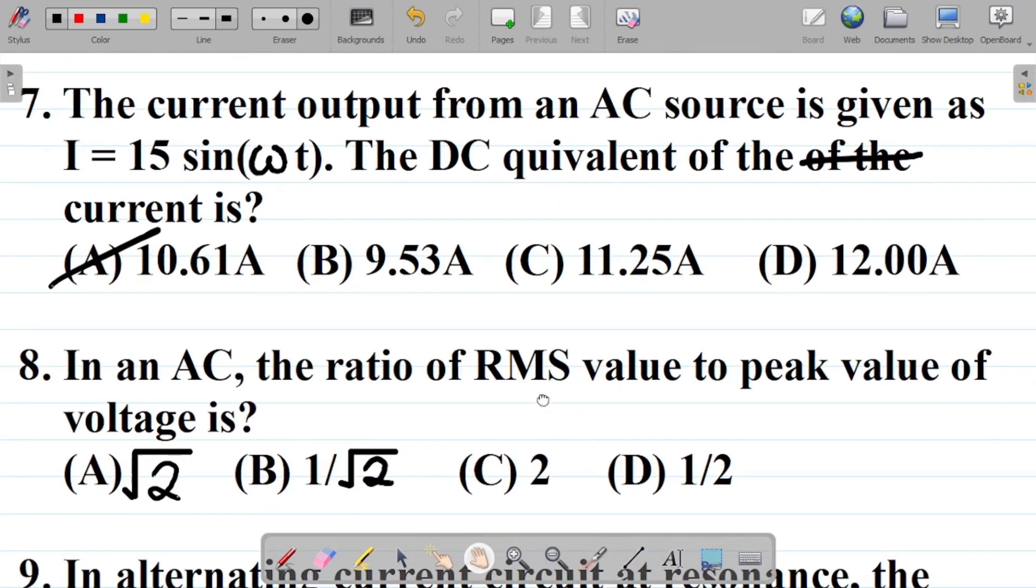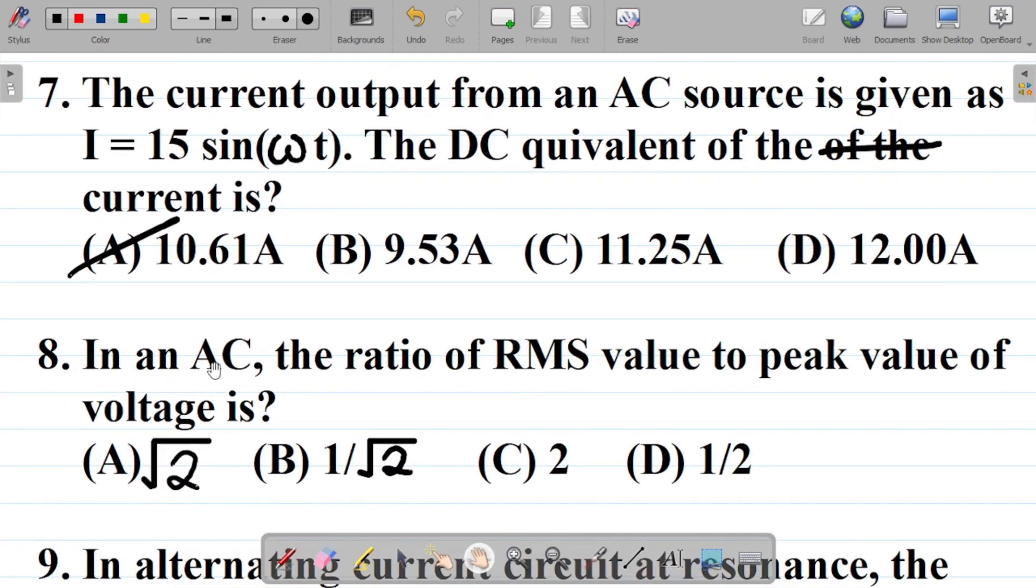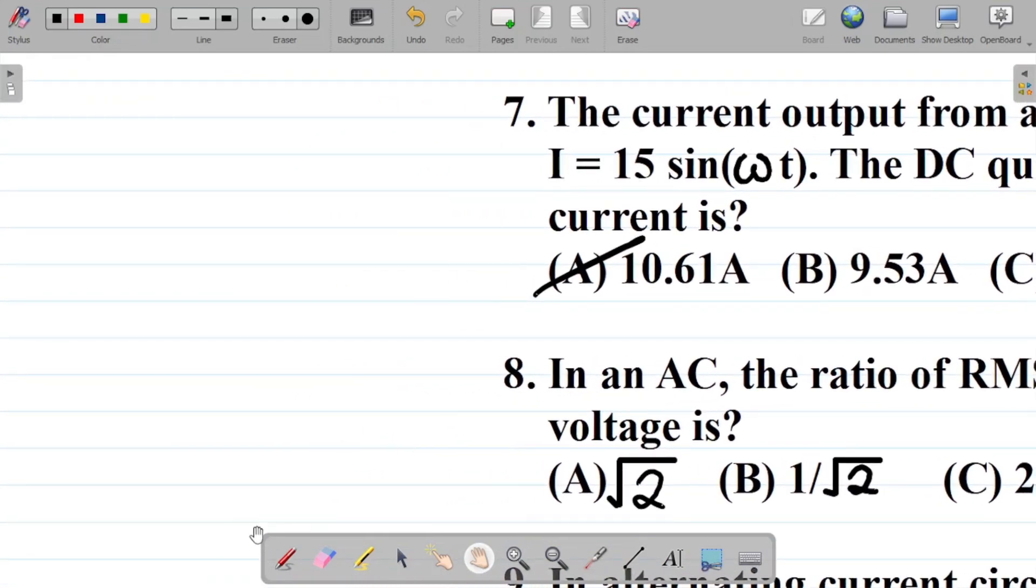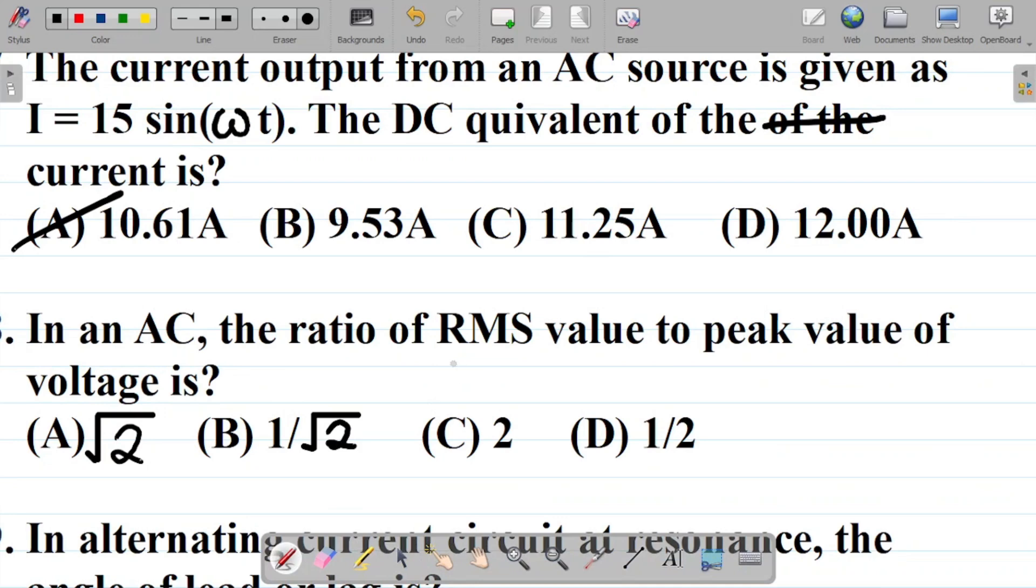Let's get to question number 8. Question 8 says in an AC, the ratio of RMS value to peak value of voltage is... In an AC, the ratio of RMS value to peak value, the relationship as we've always said is that V RMS is equal to V peak, that's peak voltage, over root 2. In this question, they said the ratio of the RMS value to peak value.